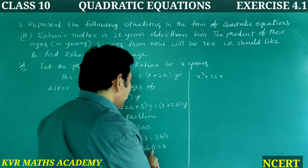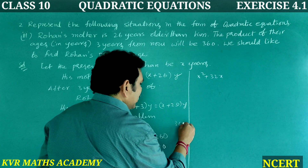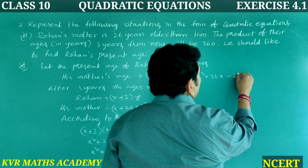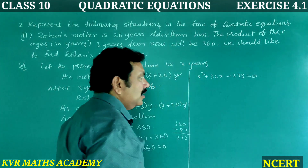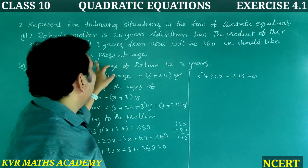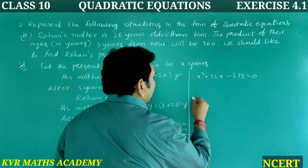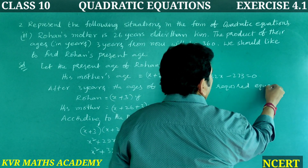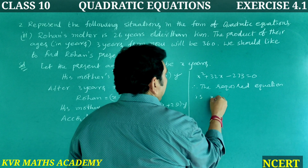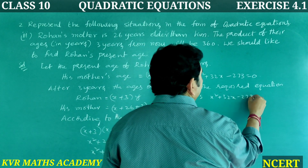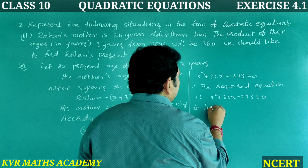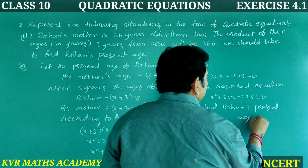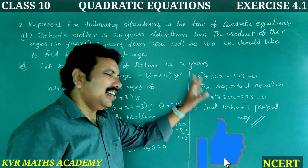So this is the required quadratic equation. The required equation is X² + 32X − 273 = 0 to find Rohan's present age. Have you understood clearly?